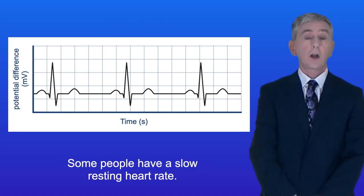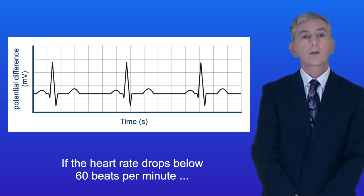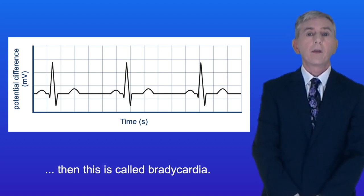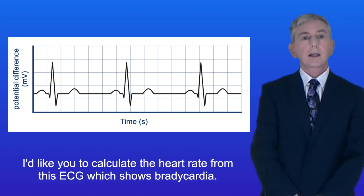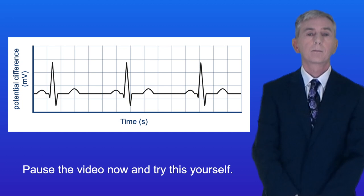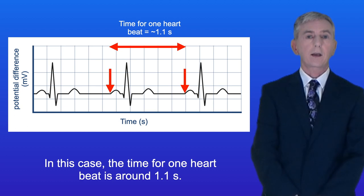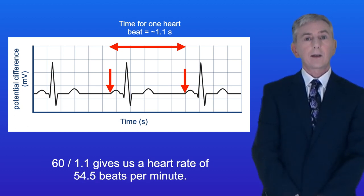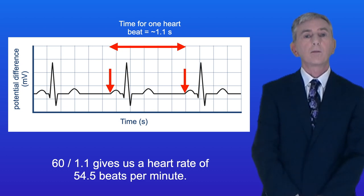Now some people have a slow resting heart rate. If the heart rate drops below 60 beats per minute then this is called bradycardia. I'd like you to calculate the heart rate from this ECG which shows bradycardia — so pause the video now and try this yourself. In this case the time for one heartbeat is around 1.1 seconds, and dividing 60 by 1.1 gives us a heart rate of 54.5 beats per minute.